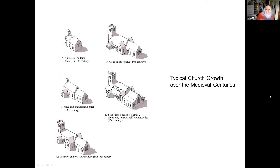Typically churches grow — they evolve over the centuries. There's a little single-cell rectangle, then a chancel gets added. The 13th century was a great century for chancels as church rituals developed and they needed more space. Maybe a porch gets added, then the whole thing gets enlarged with transepts and a western tower. Aisles get added in the 14th century. By the end of the medieval period they've added aisles to the chancel as well. That's a typical form in prosperous areas like East Anglia and West Yorkshire, less so in areas like County Durham.